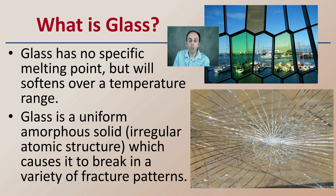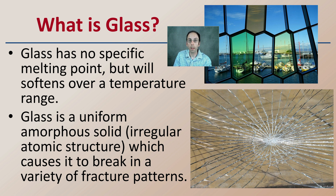Glass is also a uniform amorphous solid, which means it has an irregular atomic structure. This causes it to break in a variety of fracture patterns, which can vary based on impact, force of impact, angle of impact, and also the type of glass.